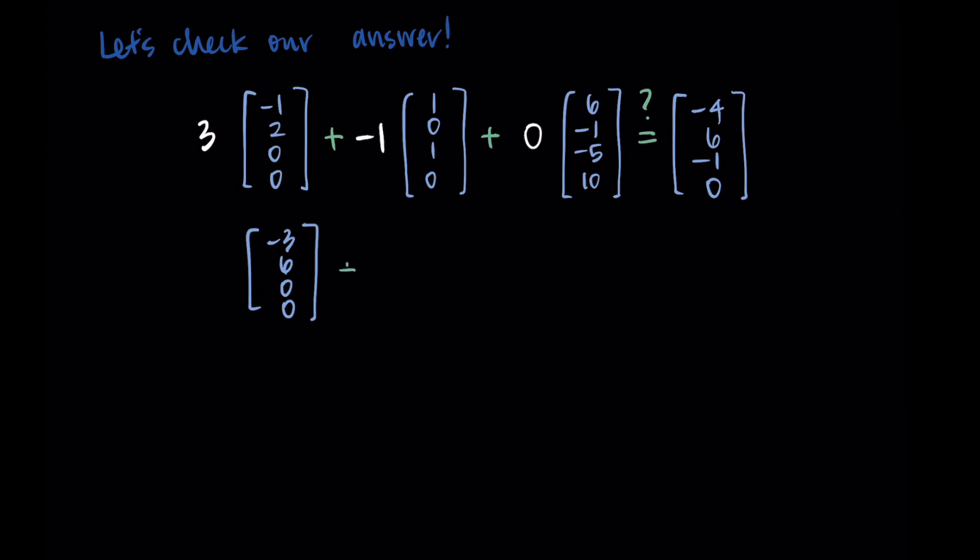For the second vector, I'm distributing the negative 1, I get negative 1, 0, negative 1, 0. And then the 0 applied to the third vector actually makes the whole thing into 0. This tells me that I didn't even need that third vector to make a linear combination. We just needed the first two.